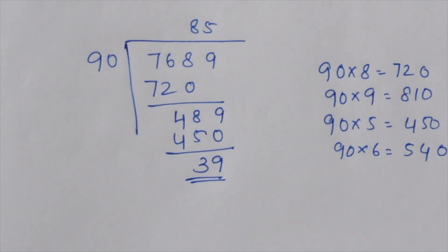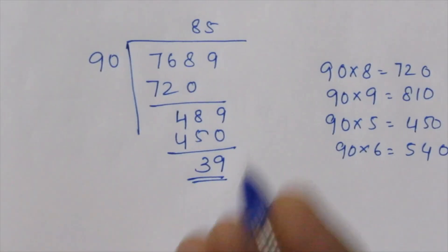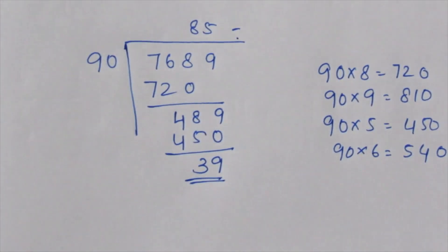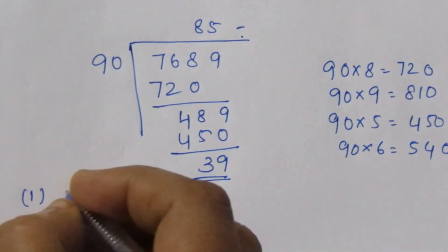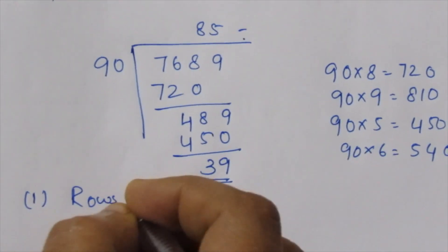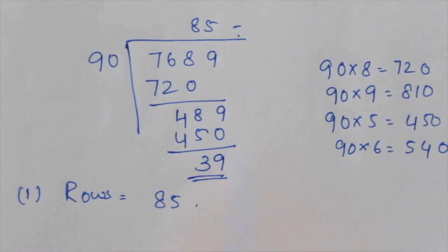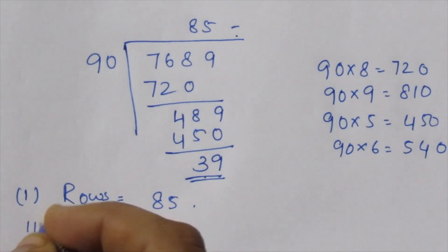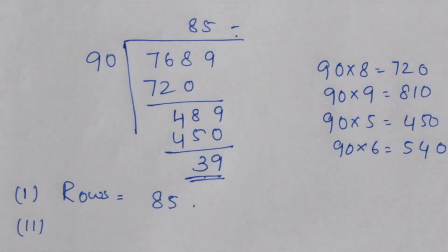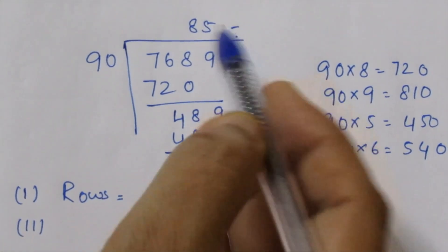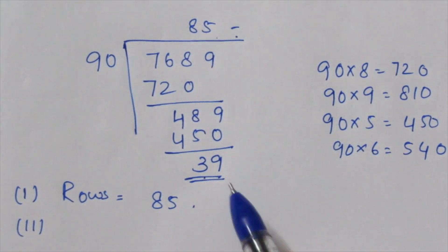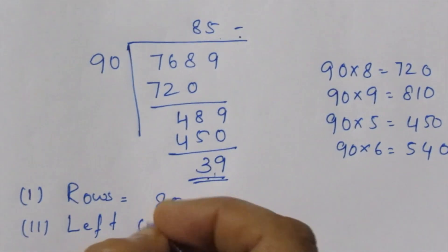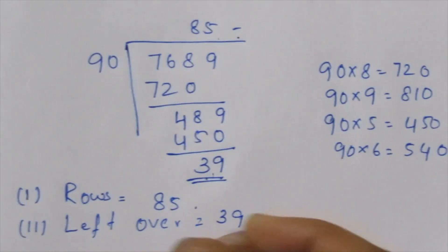So how many rows will there be? Looking at the rows, the answer is 85 rows. Second question: will there be any chairs left over? The remainder is 39, so 39 chairs are left over.